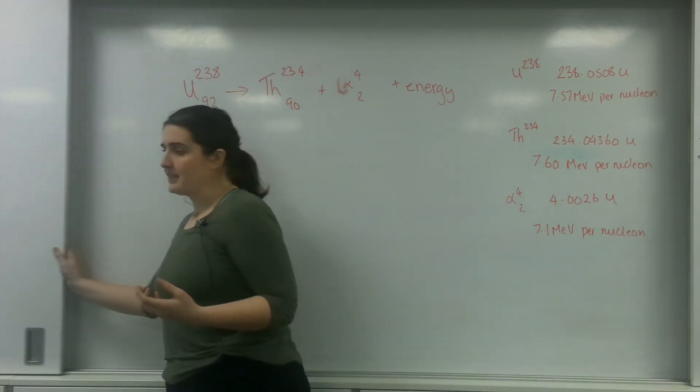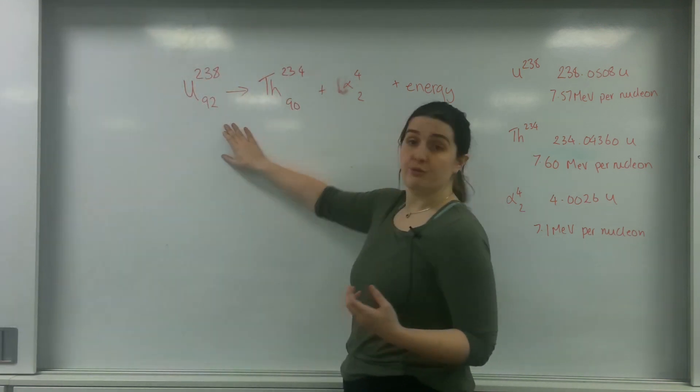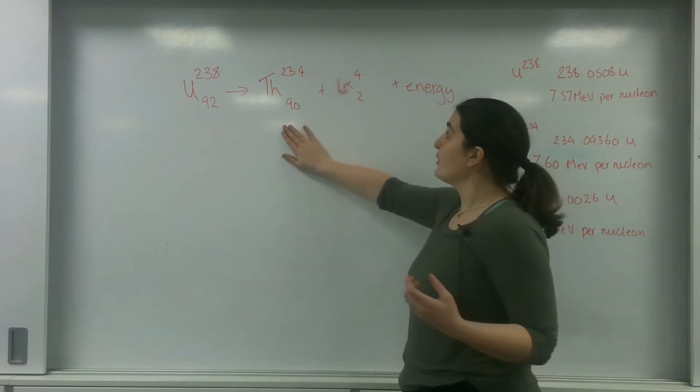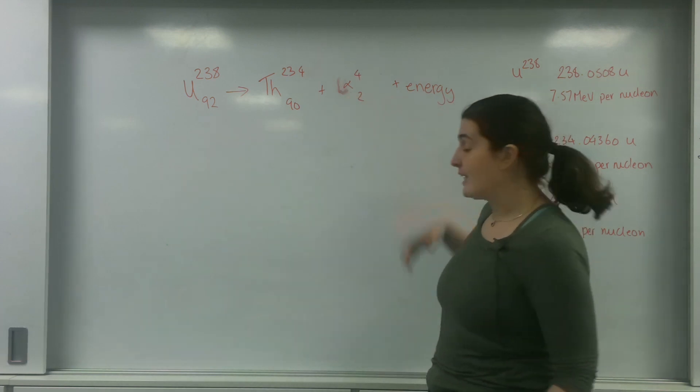What I'm going to do today is give an example of unstable uranium-238 decaying into thorium and an alpha particle and releasing energy.